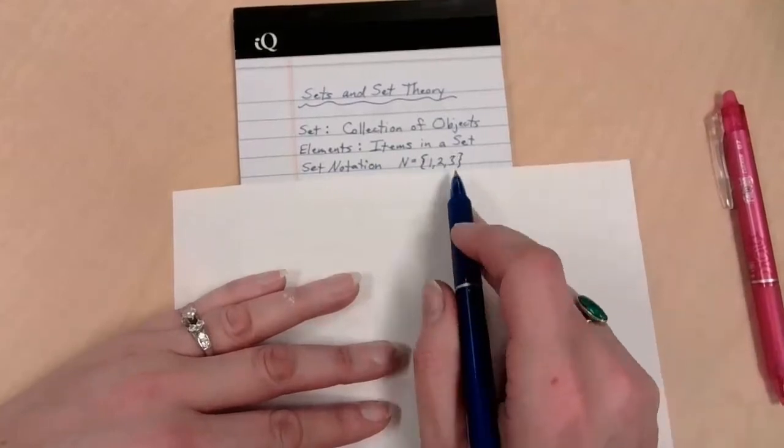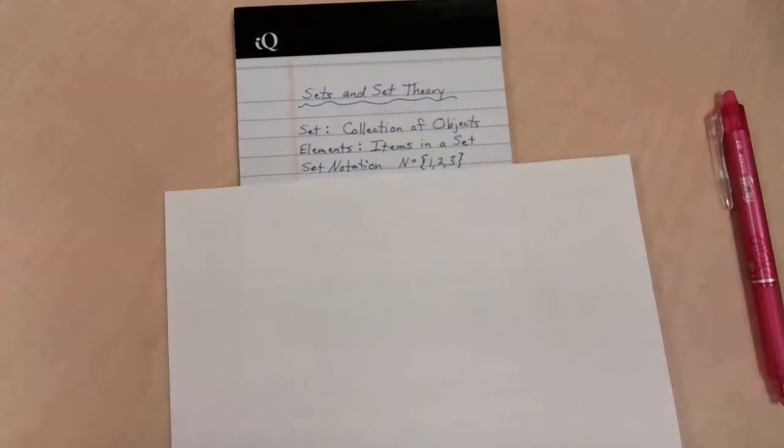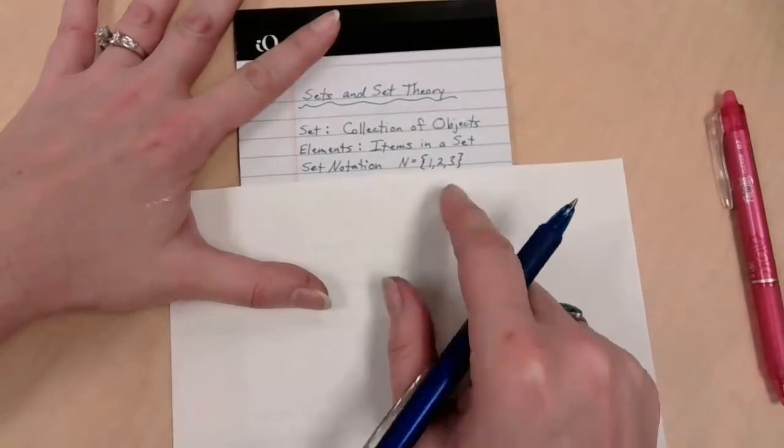Those are the kind of funky, squiggly ones that are on both sides. If you can't draw them very well, practice. Turn your paper sideways and draw seagulls. So that's set notation. Capital letters, and then the funny bracket things.